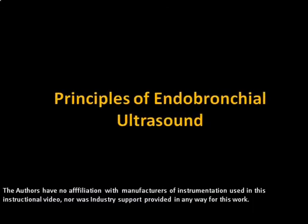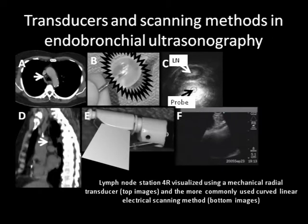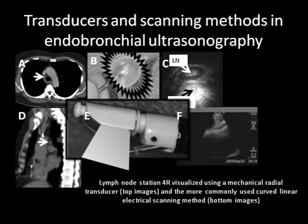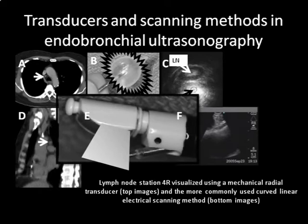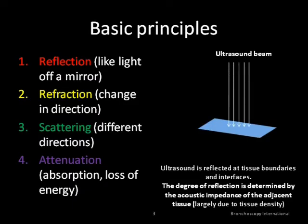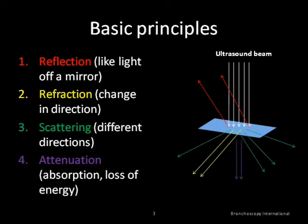The principles of ultrasonography are the same, whether imaging the abdomen, heart, blood vessels, pleura, or mediastinum. Regardless of whether endobronchial ultrasound is performed using a radial or electronic curved array transducer, the ultrasound beam undergoes reflection, refraction, scattering, and attenuation as it passes through tissues. Each of these can affect image quality.